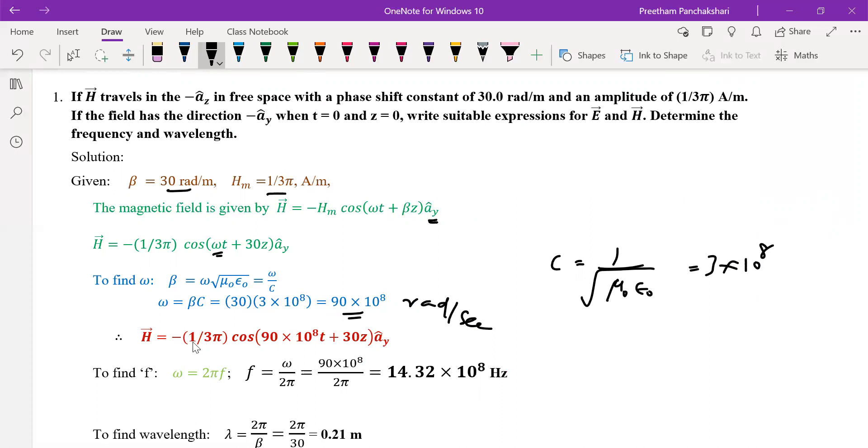Now finally, H becomes minus 1 by 3π cos ωt plus βz into Ay. So ω is ready. Omega is ready. That omega can be used in the equation of the H.